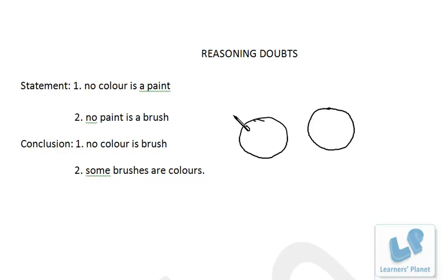No connection is there between them. It's color, it's paint. No paint is a brush, so paint and brush both of them are also disjoint sets. All the three over here are disjoint with each other.